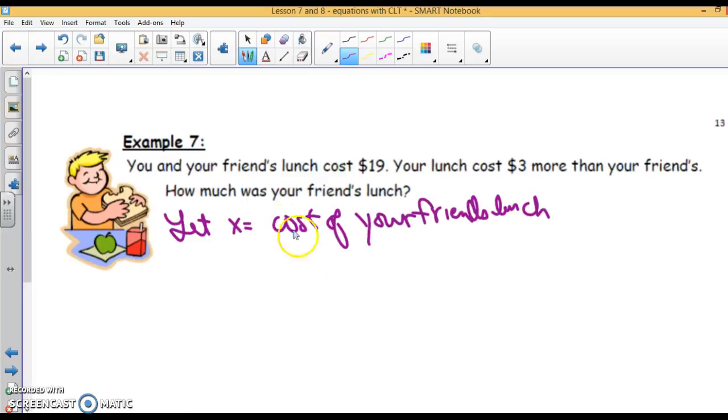You said x is the cost of your friend's lunch because that's what you don't know. Now, what you do know is your lunch is $3 more than your friend's. So if your friend's lunch costs x, yours is going to be $3 more than that, so x plus 3. That's the cost of your lunch. Now let's go back to the equation. We have to find our variable for the problem. It says you and your friend's lunch cost $19. So your friend's lunch is x plus your lunch x plus 3 is 19.